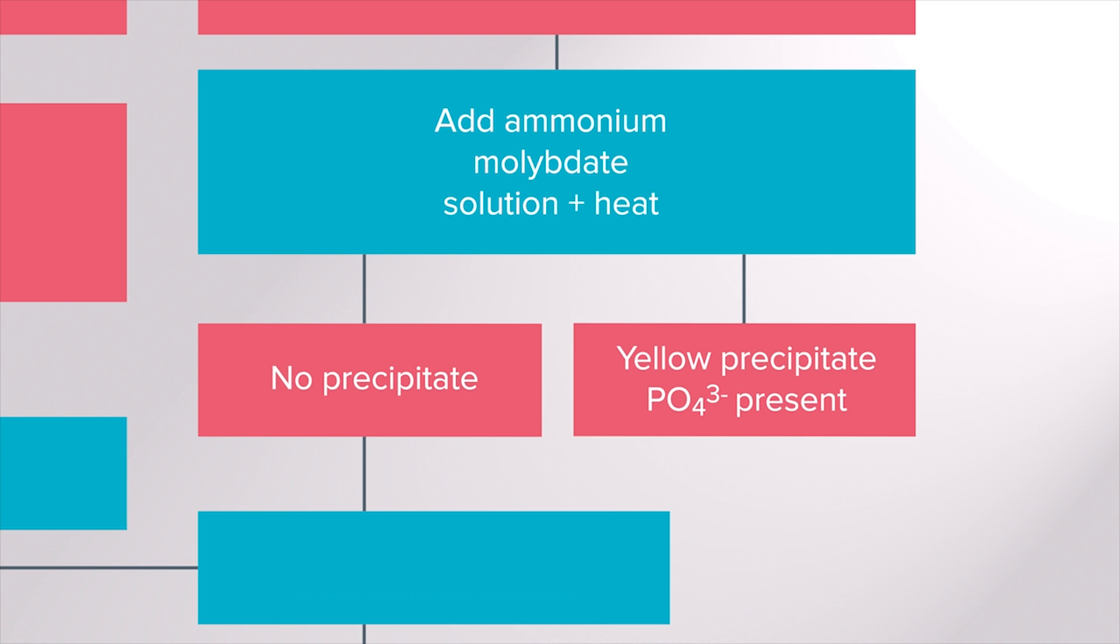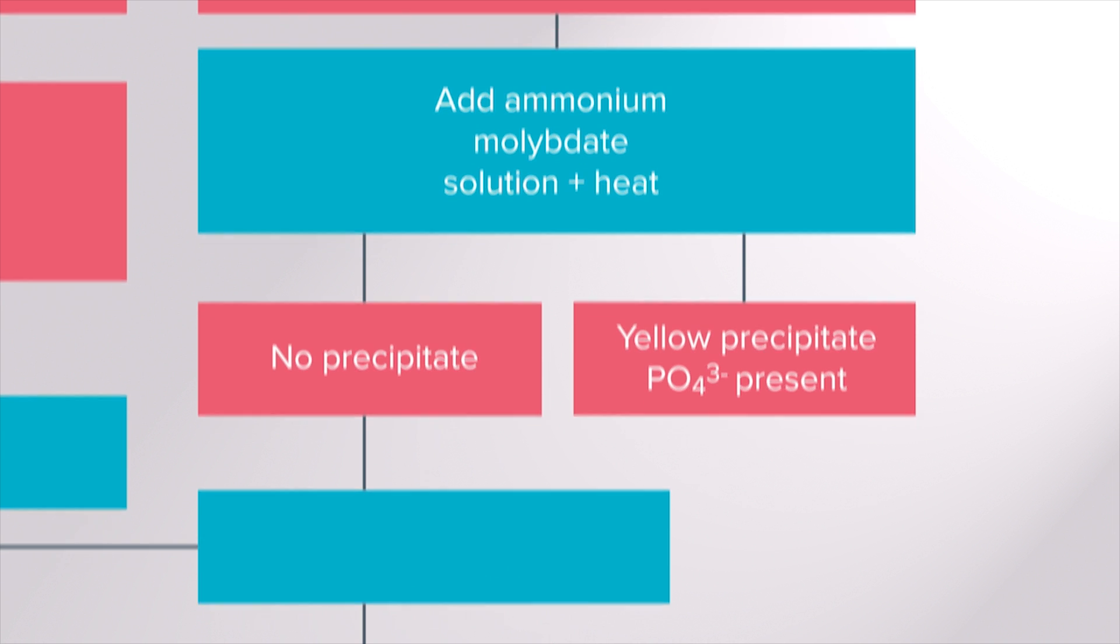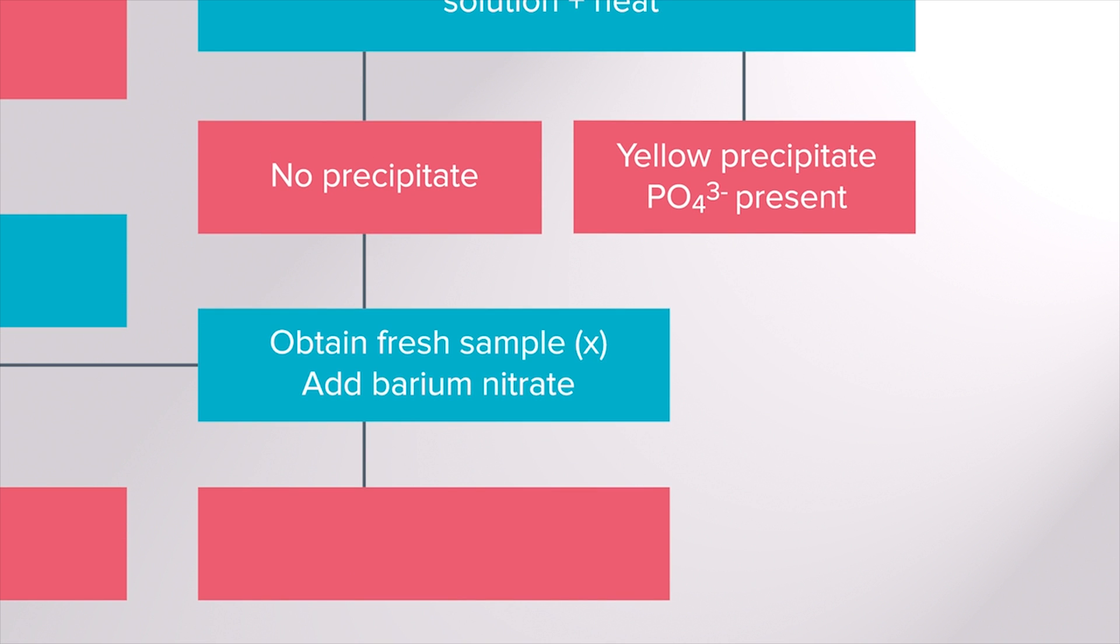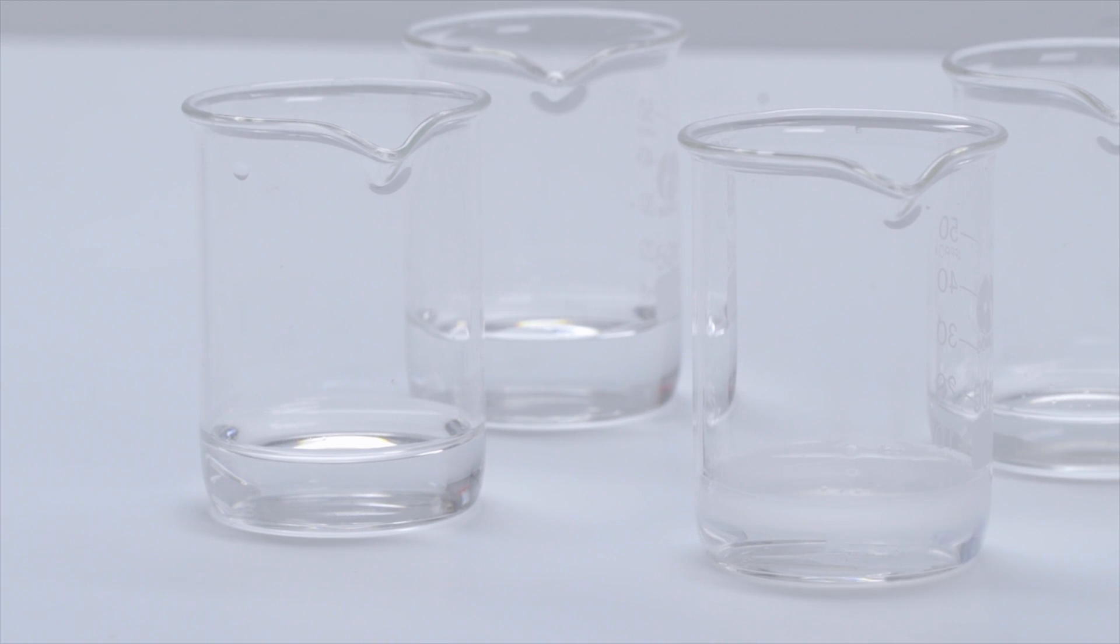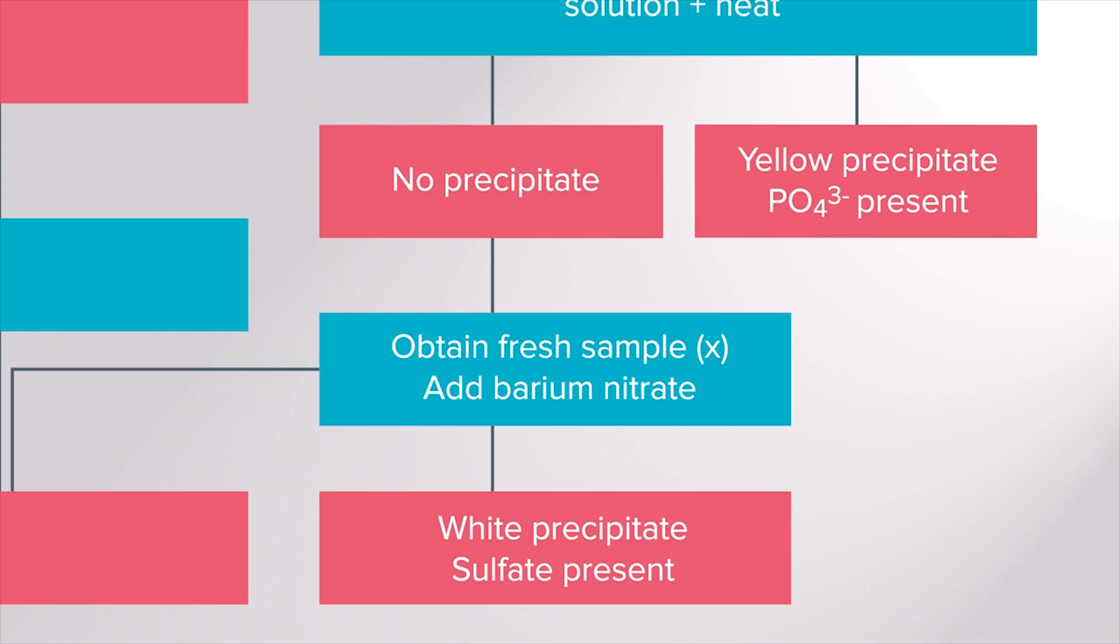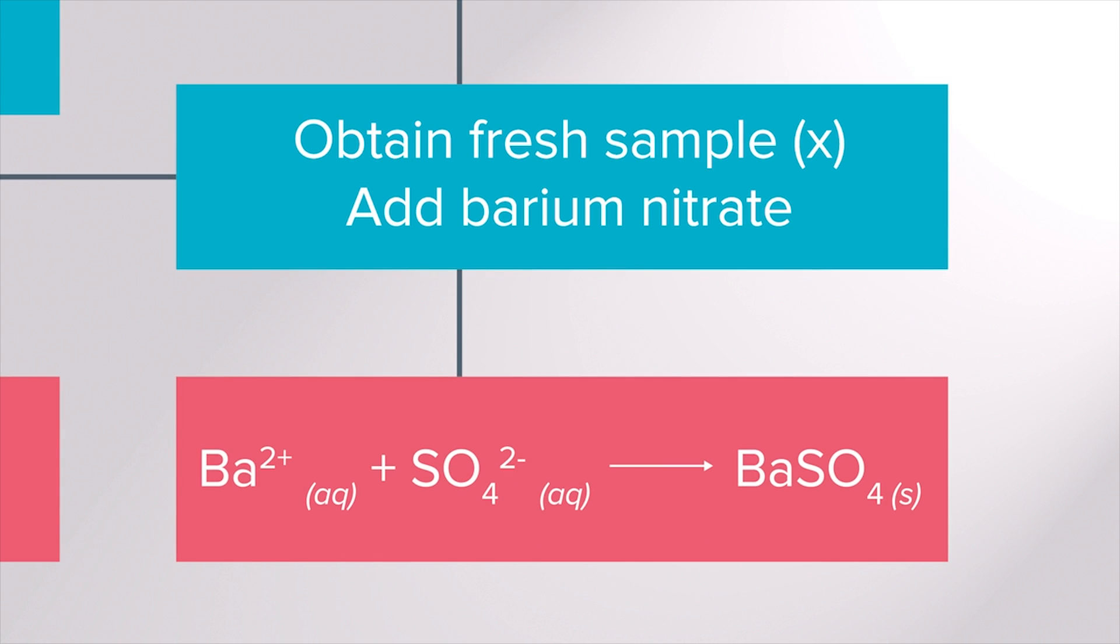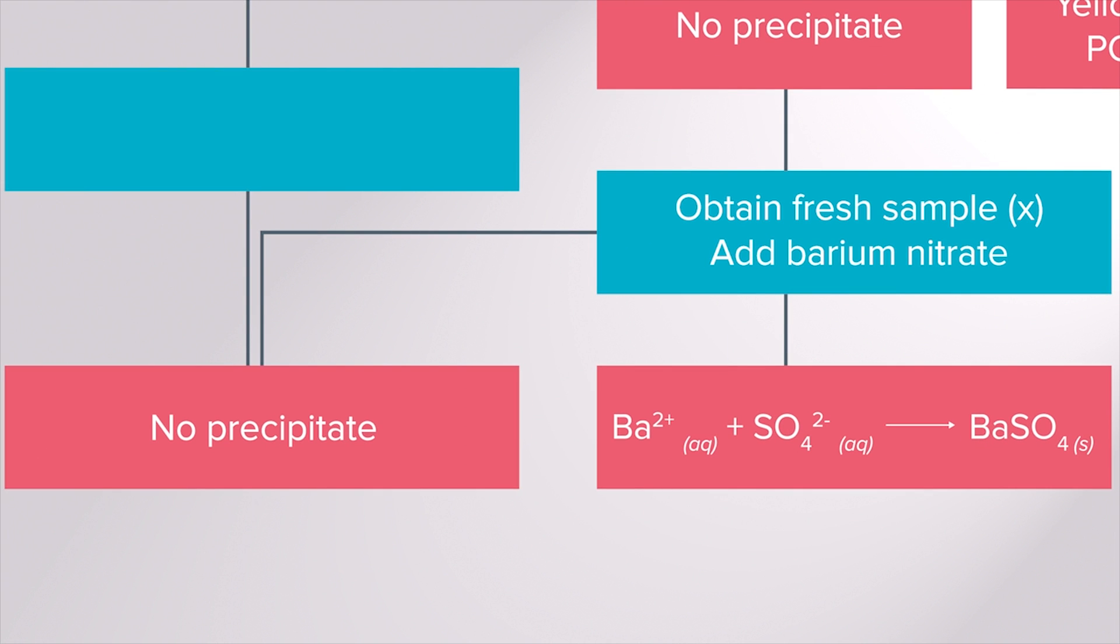If no yellow precipitate forms it means phosphate ions are not present. We need to obtain a fresh sample to test for the presence of sulphate or chloride ions. We need to test for sulphate ions first by adding barium nitrate. It helps to slightly acidify the solution. Solubility rules tell us that if sulfate ions are present a white precipitate of barium sulphate will form. However since barium chloride is soluble no precipitate will form.